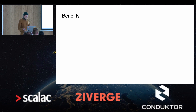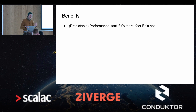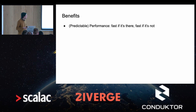Benefits for this: obviously you get predictable performance. Things are fast if they're there, fast if it's not. It's slightly different from a cache because if you have a cache miss, you're still going down to the DB. If the DB is slow or if the DB is gone, then your tail latencies are going up. So you have a downside. If it's not there, it's not there. But it's still fast.